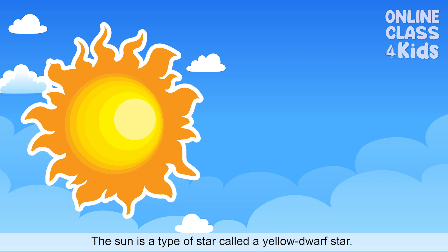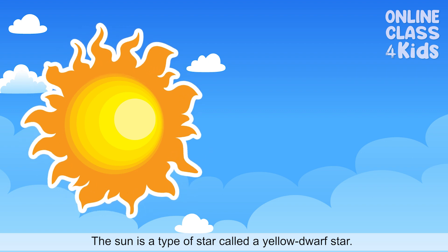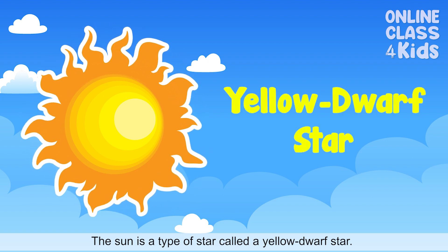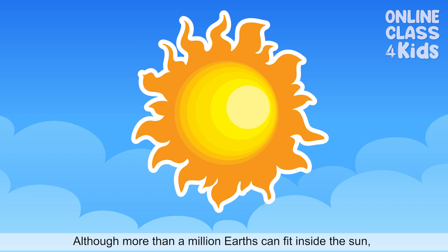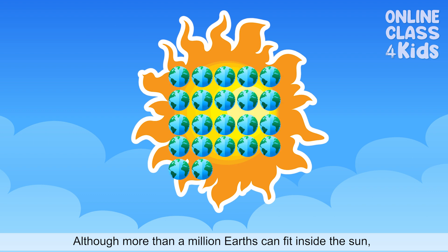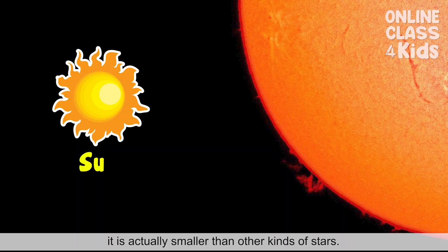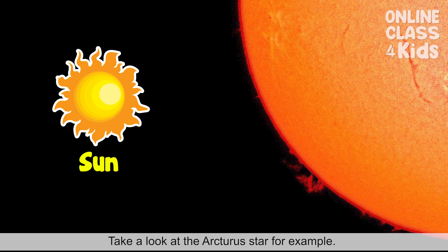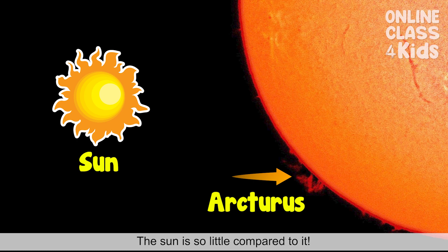The Sun is a type of star called a yellow dwarf star. Although more than a million Earths can fit inside the Sun, it is actually smaller than other kinds of stars. Take a look at the Arcturus star for example. The Sun is so little compared to it.